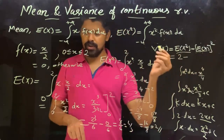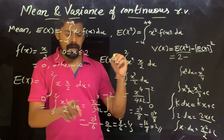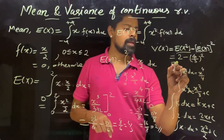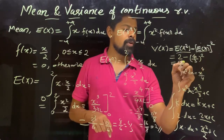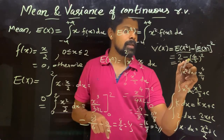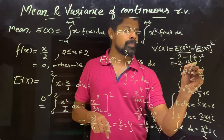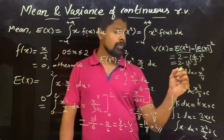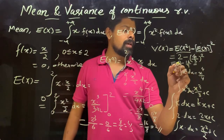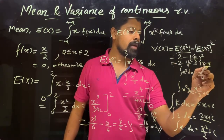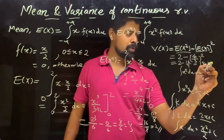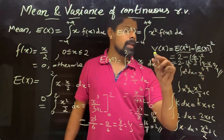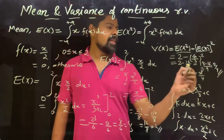The variance is equal to E(x²) minus [E(x)]². That is 2 minus (4/3)² = 2 minus 16/9 = 18/9 minus 16/9 = 2/9. So the variance of x is equal to 2/9.